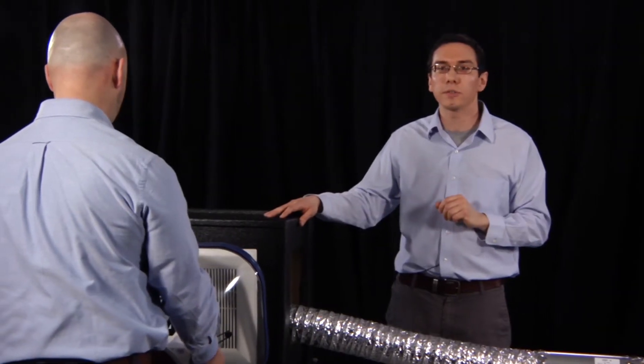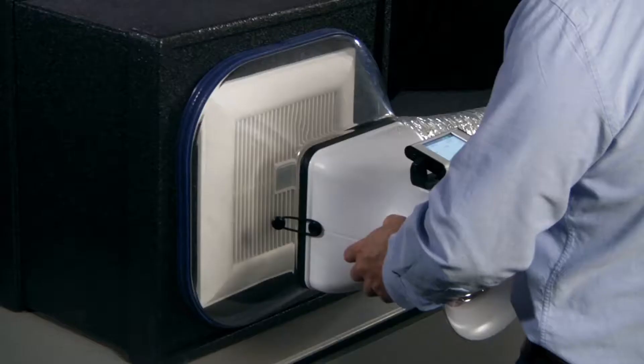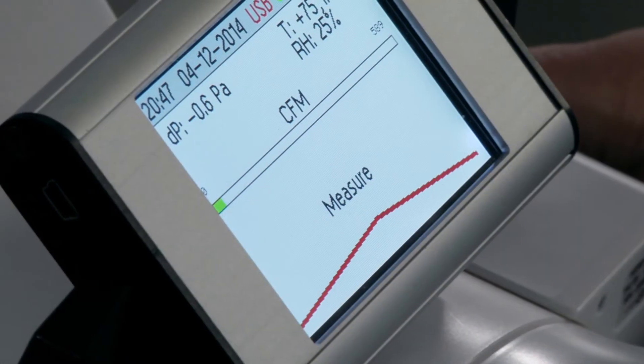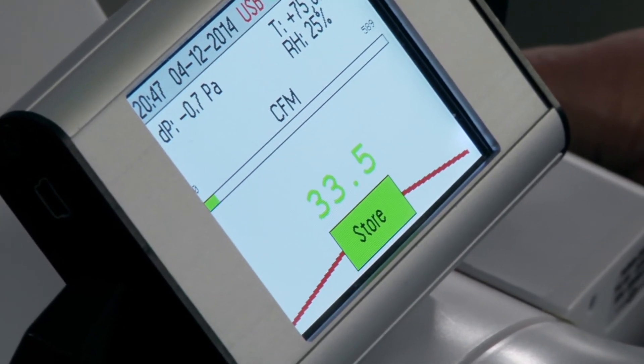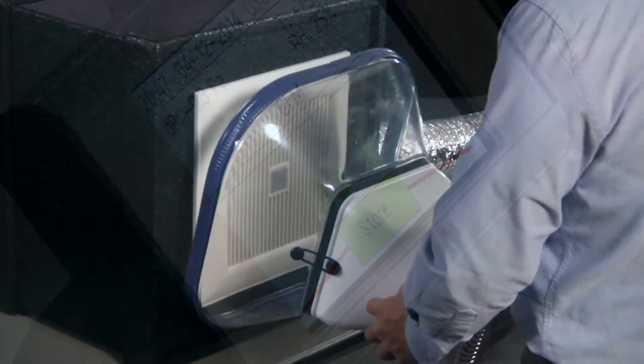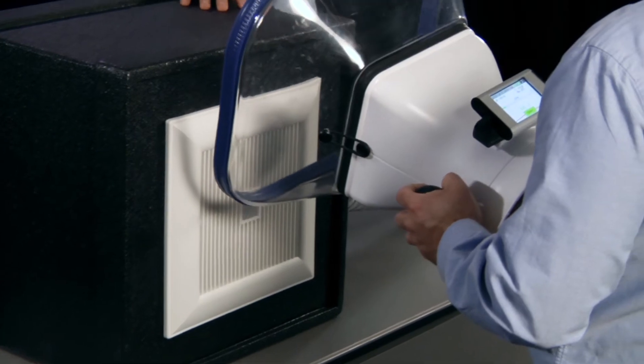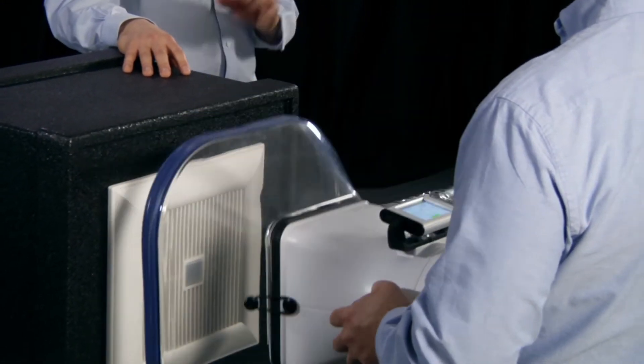Now, James is going to adjust the flow hood so it's not quite flush. Let's see what happens to the number. Okay, you can see that the airflow is dropping. It's no longer getting an accurate reading. So, James is going to fix that and then measure the average airflow over 10 seconds.